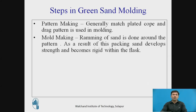The second step involved in Green Sand Moulding is mould making. When the pattern is ready, the cope half is ready, and drag half is ready. First, sand is put into the pattern and ramming of sand is done around the pattern. This ramming helps to develop strength, because when rammed, the grains start coming together. As a result of this packing, sand develops good strength and becomes rigid within the flask.